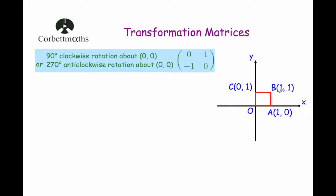So we're going to start off with the unit square, this square O, A, B, C, and we're going to multiply each of these points by this matrix to show you that this transformation matrix works. So let's start by writing down our matrix: 0, 1, minus 1, 0.